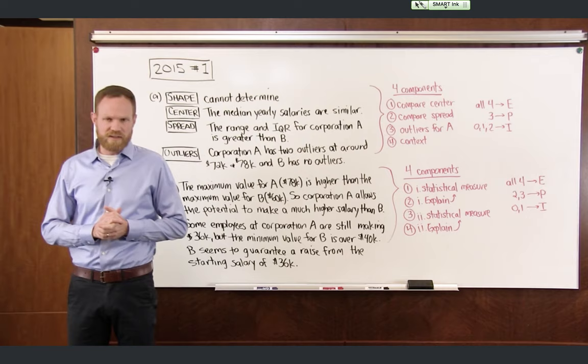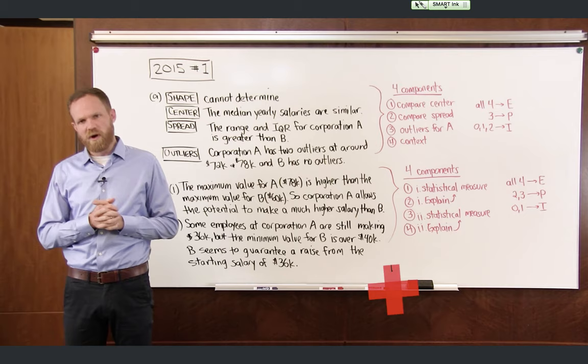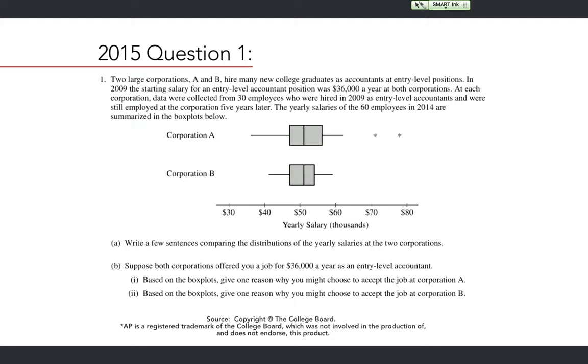Let's take a look at an AP exam question that would be typical of what you might see for describing or comparing two distributions. This is question number one from the 2015 AP exam. My expectation is that you have already tried the problem on your own. The question: two large corporations A and B hire many new college graduates as accountants at entry-level positions.